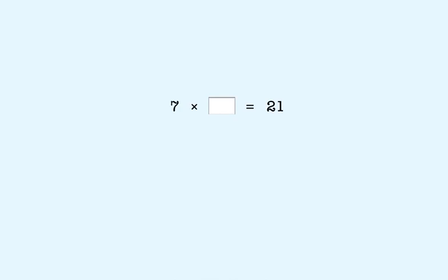In this lesson, you'll learn to find a missing factor when the other factor is 7, which we show like this. We want to answer the question, 7 times what number equals 21.